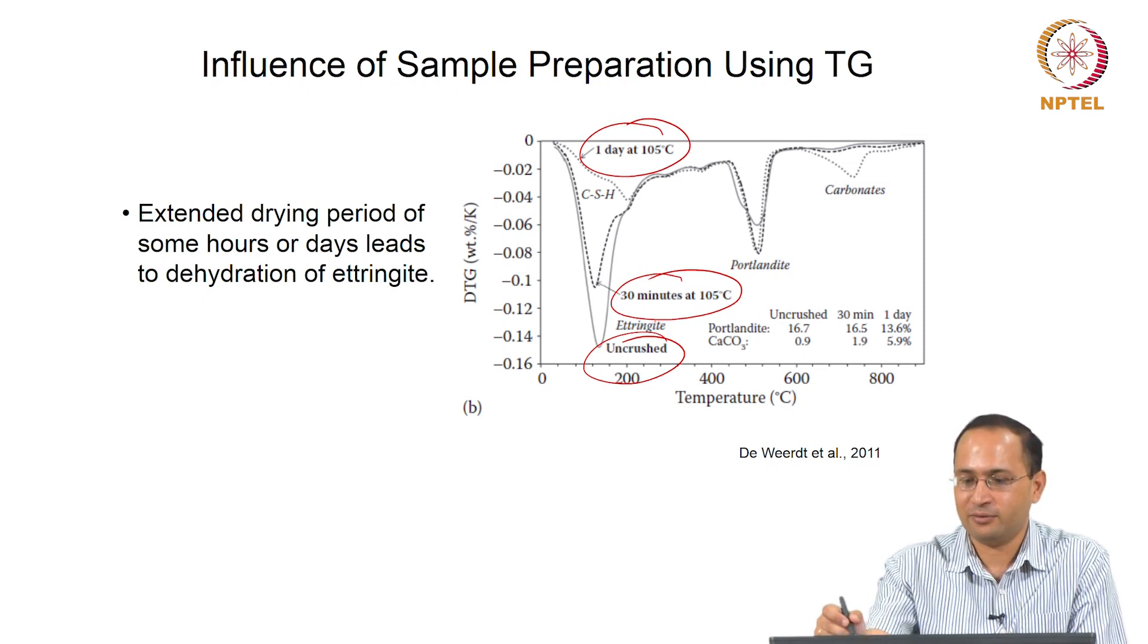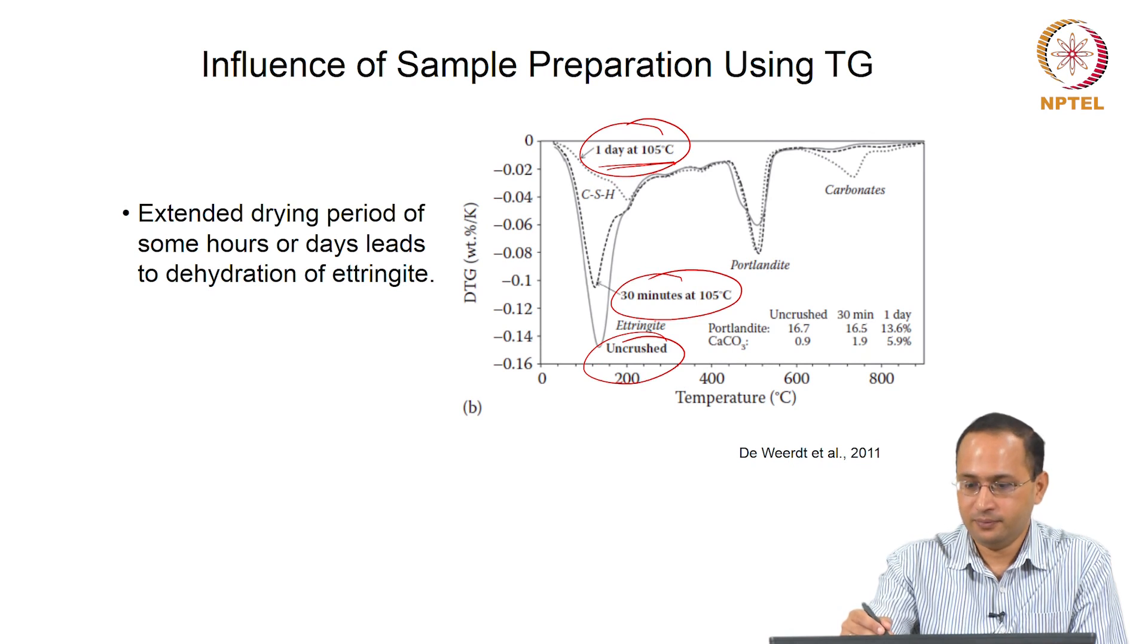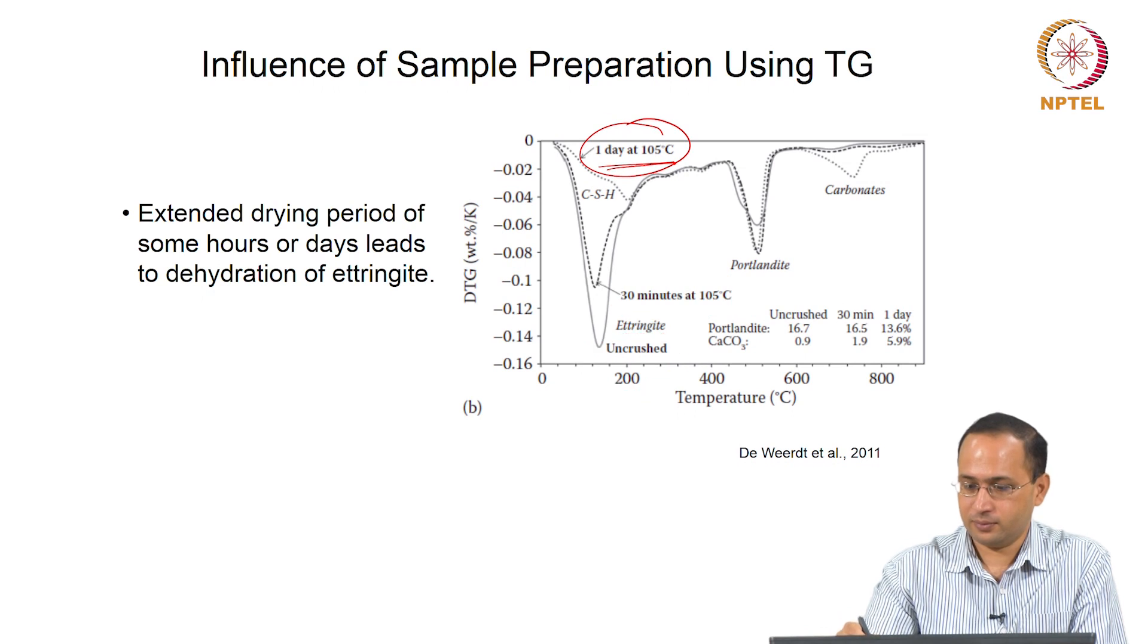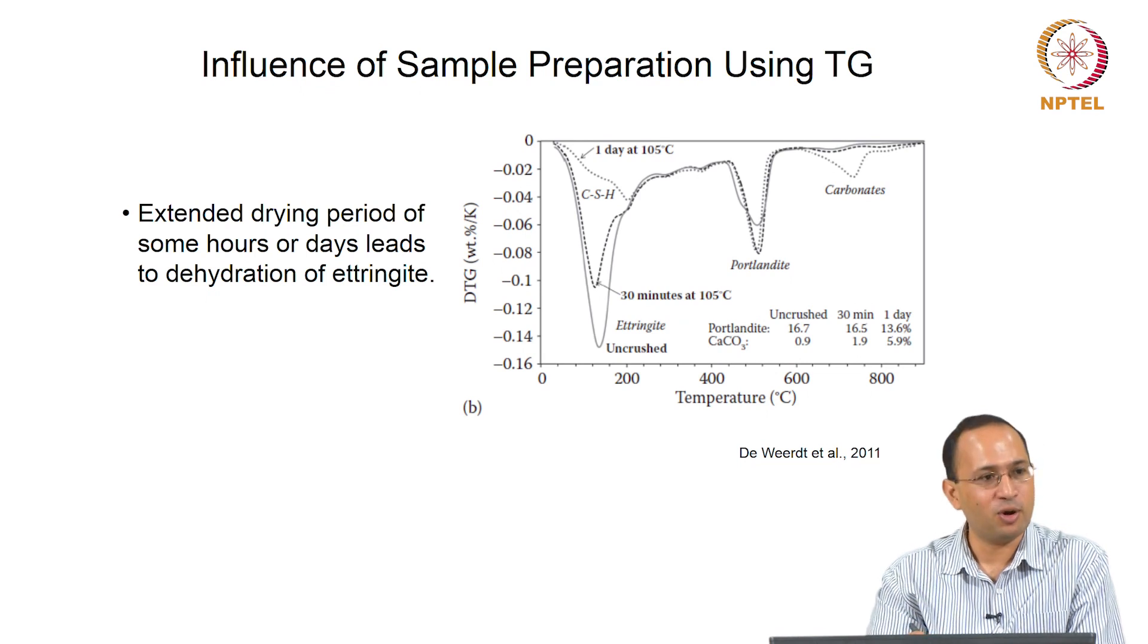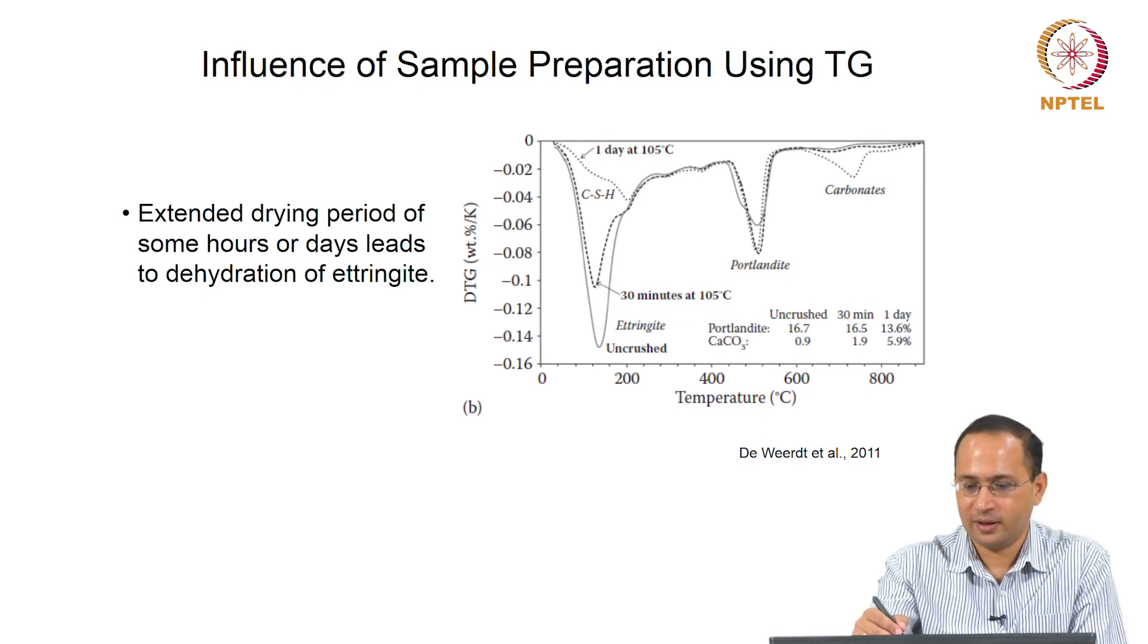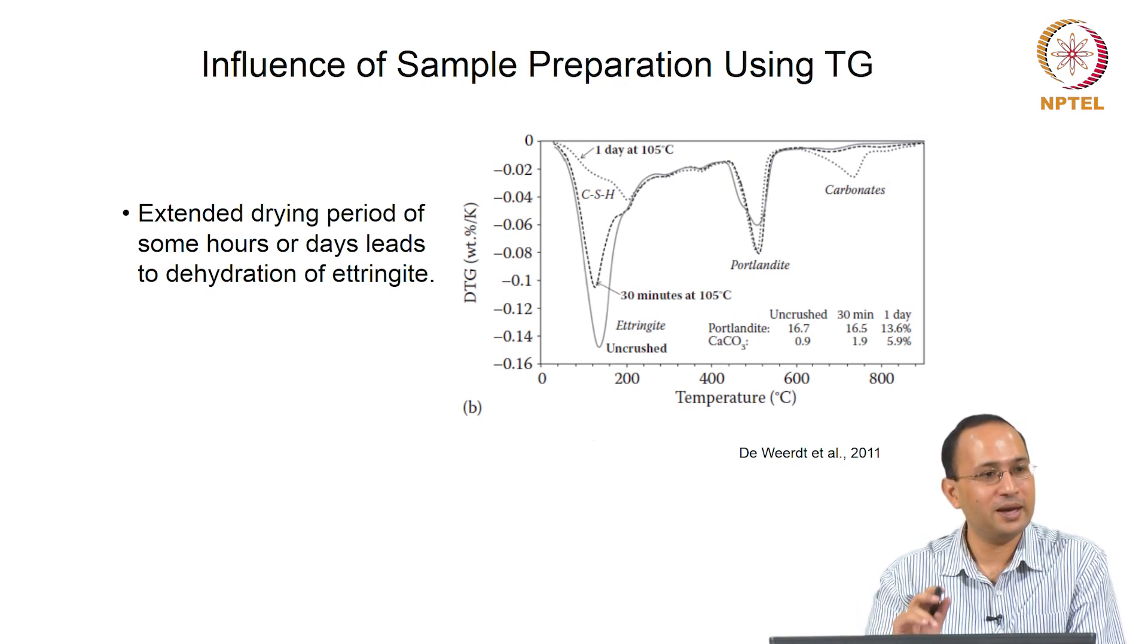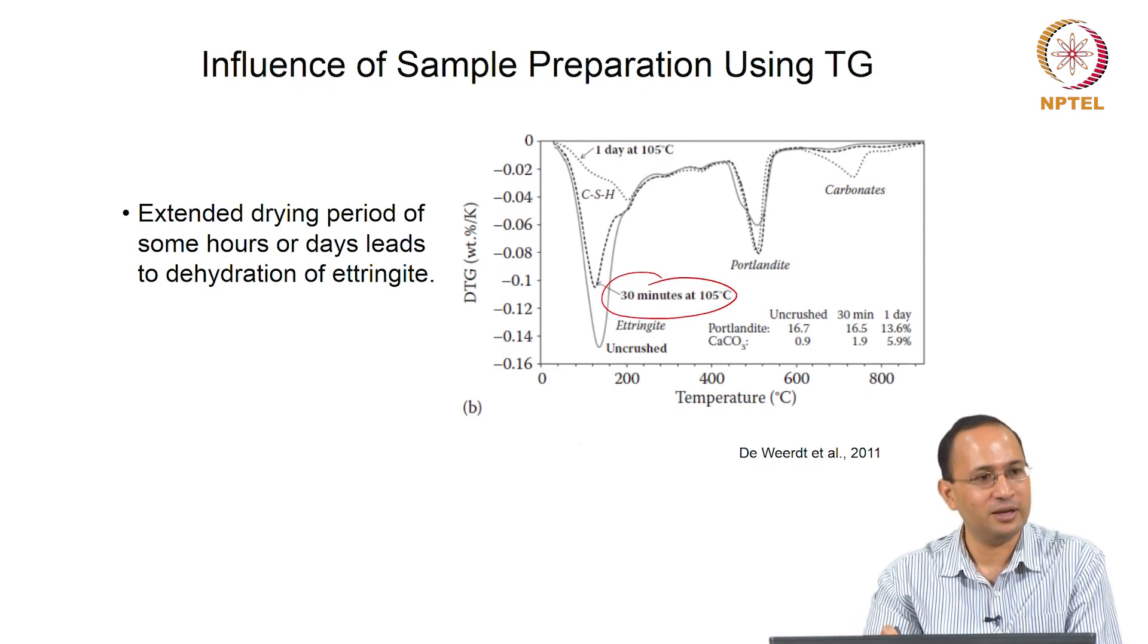Here you have an example of sample preparation. When you heat your sample for one day at 105 degrees Celsius, it drastically reduces this peak compared to undried samples. This tells you that your drying process is affecting the amount of CSH and ettringite. Even 30 minutes of drying at 105 degrees Celsius will affect your initial peak.